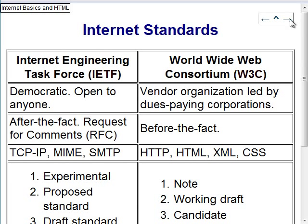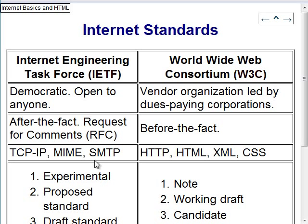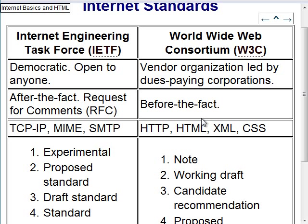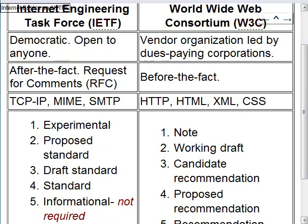There are two standards bodies. The older one is the IETF (Internet Engineering Task Force) — it's democratic and open to everybody, and it standardized TCP, IP, MIME, and SMTP. After the web was created, the World Wide Web Consortium (W3C) was formed, which standardized HTTP, HTML, XML, and CSS. They work differently: the IETF standardizes things people are already using, while the W3C standardizes things like XML before anyone used it.